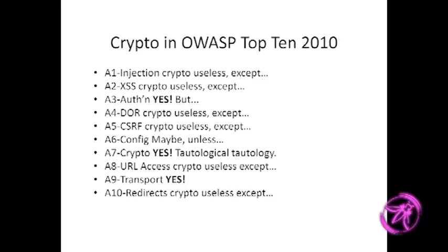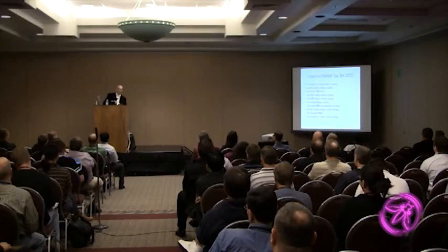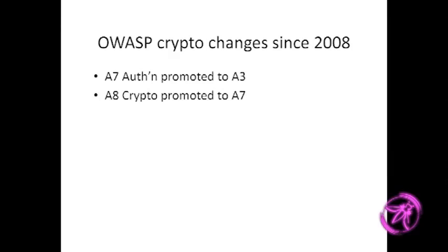It's quite possible to have a totally secure system that uses no cryptography whatsoever — you just need physically trusted channels everywhere. No passwords, terminals with physical locks, cables in pressurized pipes with gas sensors so that if someone tries to tap the cable, alarms go off. There are lots of ways of doing that. Of course we almost never do that today, but some systems were built that way, especially before crypto got relatively cheap and widespread.